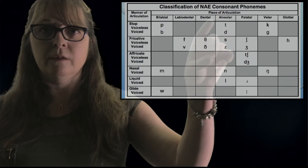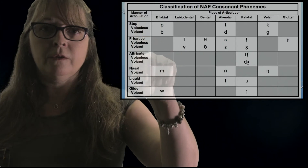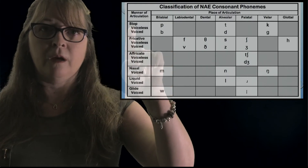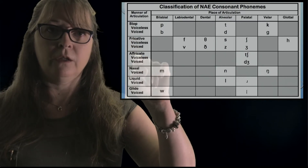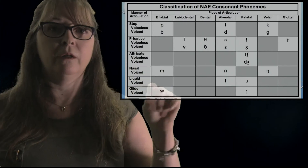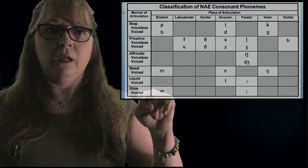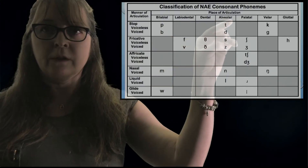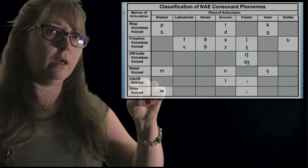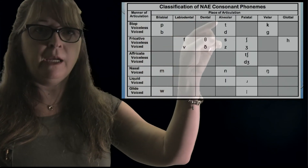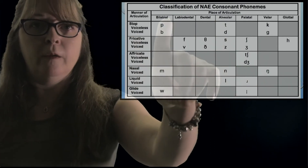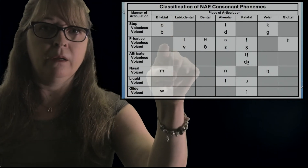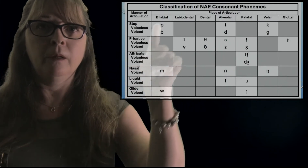These are phoneme consonants. Manner of articulation: voiceless, voiced, stop, fricative, affricate, nasal, liquid, glide. Then you have place of articulation. Bilabial — two lips come together: 'puh,' 'buh' — sounds different. 'Puh,' 'buh.' Labiodental — the fricatives are under that one. That's another sound Spanish does not generally have, the V.